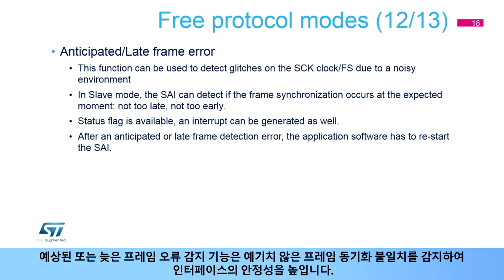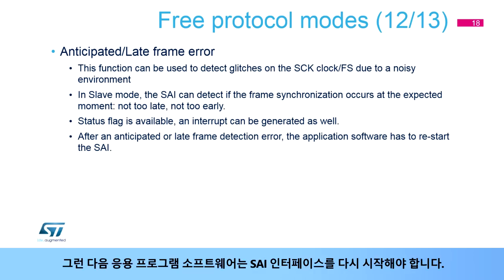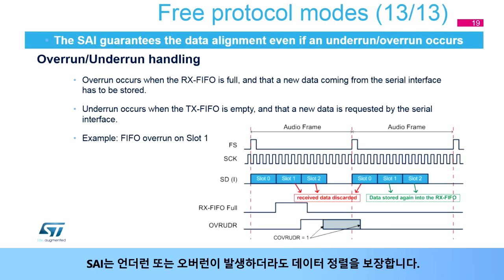The receive mute mode can be helpful to detect an amount of consecutive slots having all data reset to zero. The anticipated or late frame error detection function increases the interface's reliability by detecting unexpected frame synchronization misalignment. A status flag is set, and an interrupt can be generated. The application software will then have to restart the SAI interface. The SAI guarantees data alignment even if an underrun or overrun occurs.